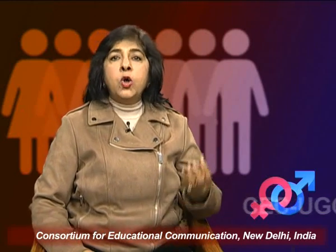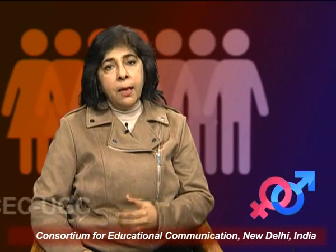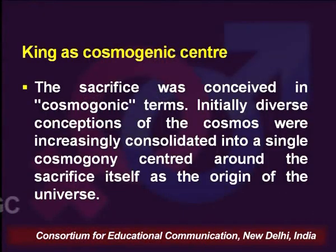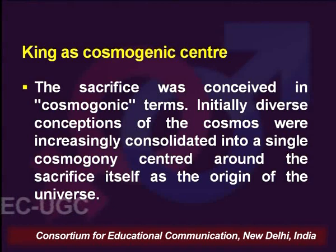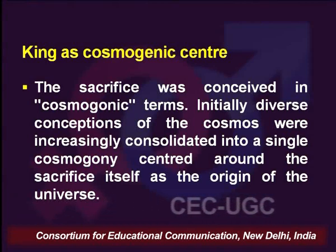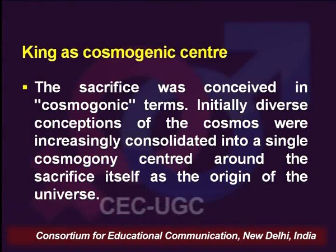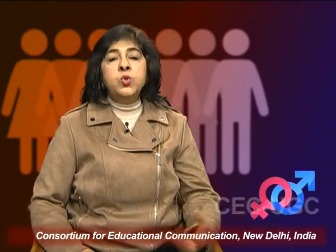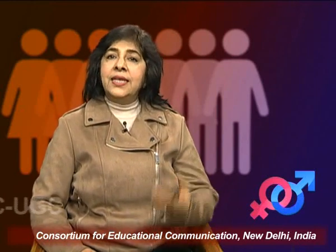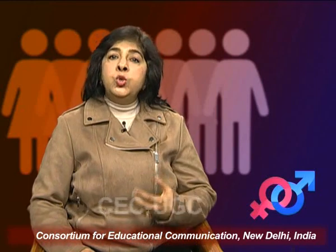The king emerged as the cosmogenic centre in this entire scheme of things, because most of these sacrifices were conceived in cosmogenic terms. While in the beginning different conceptions of the cosmos existed, in the course of ritualization and complex sacrifices which became the norm, there was consolidation of all ritualistic practices into a single cosmogony centred around the sacrifice itself as the origin of the universe. The well-being of society was thought to depend largely upon the continued performance of these rituals, and status and authority were accorded to those who performed them.